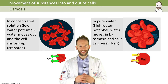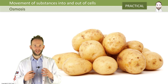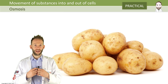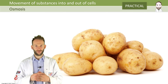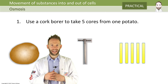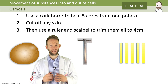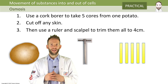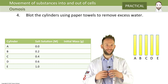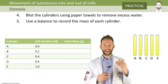Another practical you should be aware of is using potatoes to investigate osmosis. You can actually work out the osmotic potential — basically how concentrated the solution is inside potato cells — by doing this practical. What you do is use a cork borer to take five cores from a potato, cut off any excess skin, and use a ruler and a scalpel to trim them all to the same length, as that is a control variable. Then blot the cylinders using paper towels to remove any excess water on the outside, because we're interested in how much water moves in or out, and we weigh them first to get their initial mass.